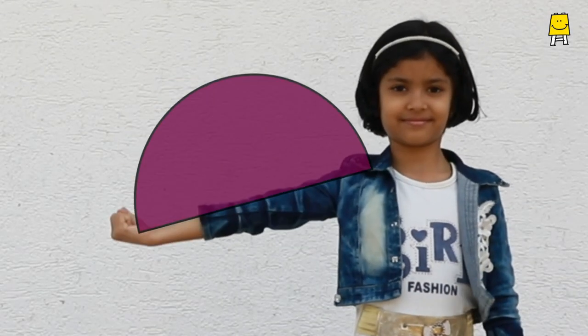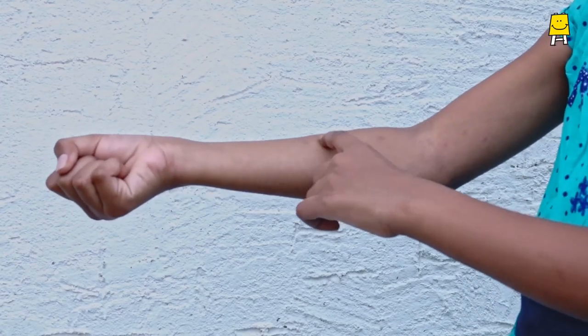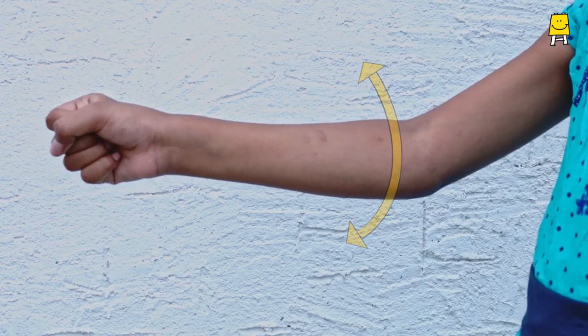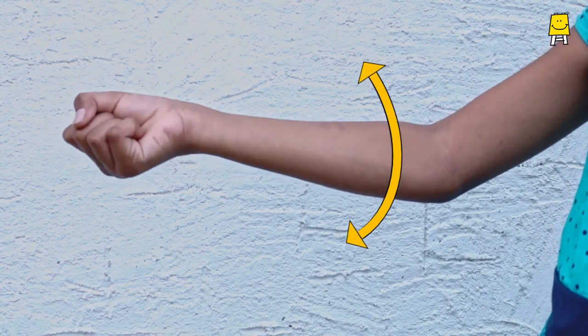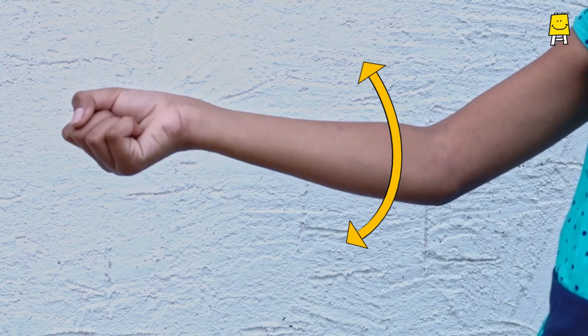Earlier we saw that the hinge joint present in our elbow moves only in one plane. This means the rotation of our forearm should be limited, but we can easily rotate our forearm. How is this possible?